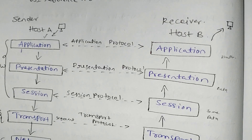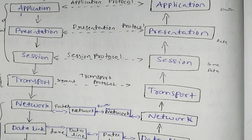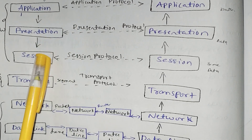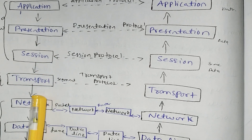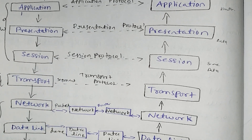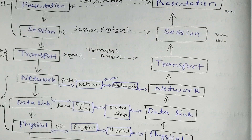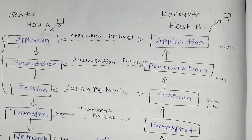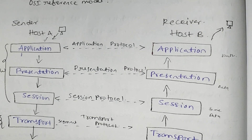Here we are talking about the OSI layer. There are seven layers: application layer, presentation layer, session layer, transport layer, network layer, data link layer, and physical layer.